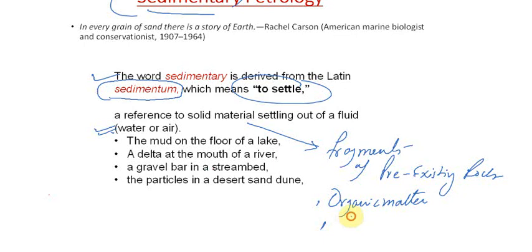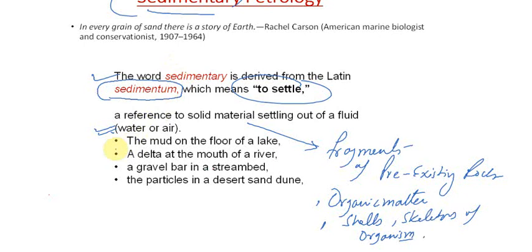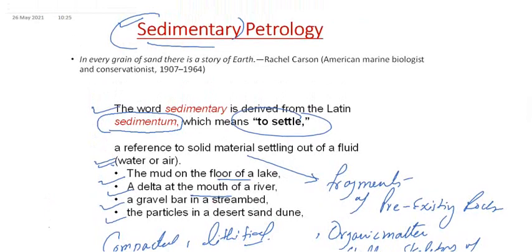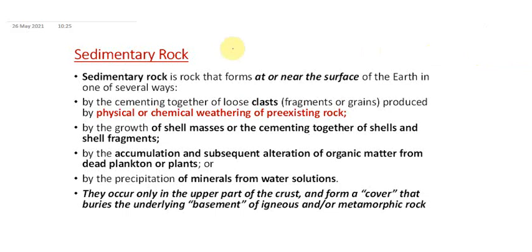Sedimentary rocks are made up of these fragments — shells or skeletons of organisms. When these fragments settle out, for example the mud on the floor of a lake, the delta at the mouth of a river, gravel bars in a stream bed, or particles in desert sand dunes — when they get compacted or lithified, they are made into sedimentary rocks. Sedimentary rocks always occur at or near the surface of the Earth.